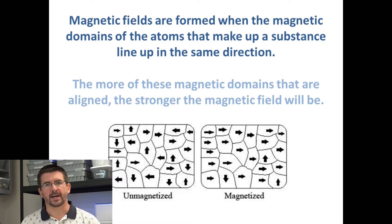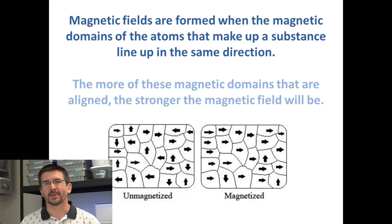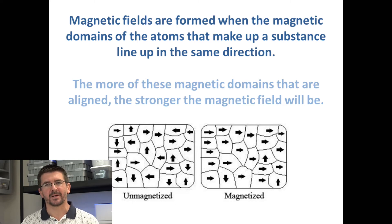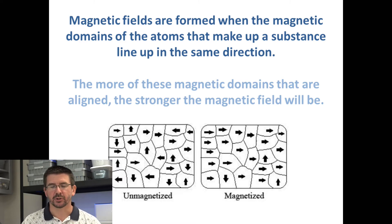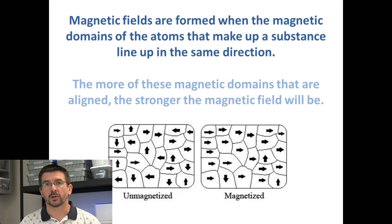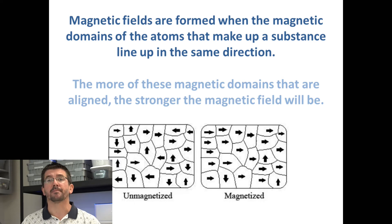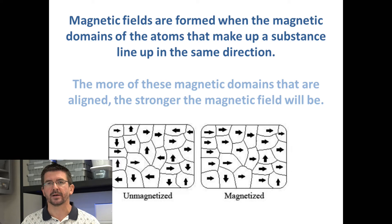Each atom has a very, very tiny magnetic field that's created by the motion of the electrons around its nucleus. Normally we wouldn't be able to detect this, but what happens in a magnet is these magnetic fields will line up in the same direction. The unmagnetized object has magnetic fields facing all different directions, but in the magnetized object, the magnetic fields of all — or most — of the atoms are lined up in the same direction, giving a strong enough magnetic field that the object will be a magnet.